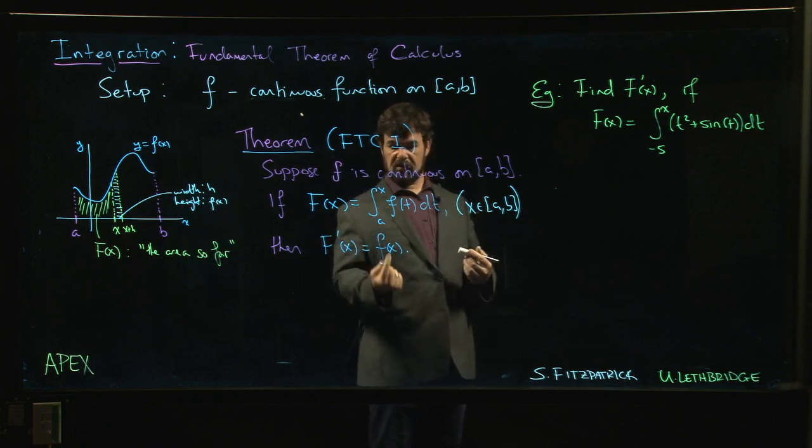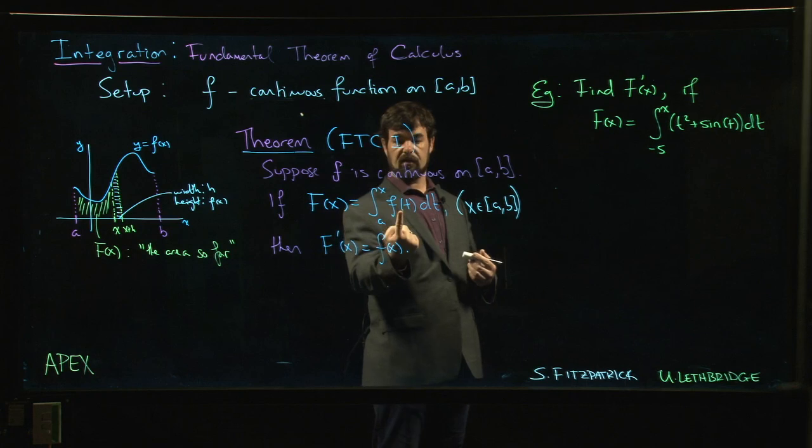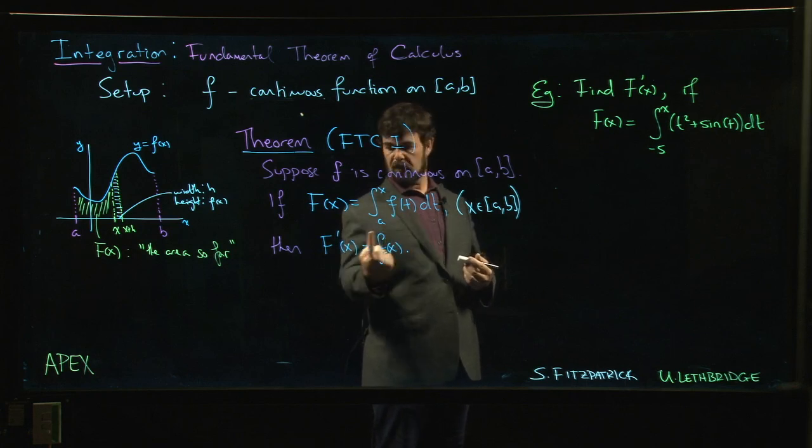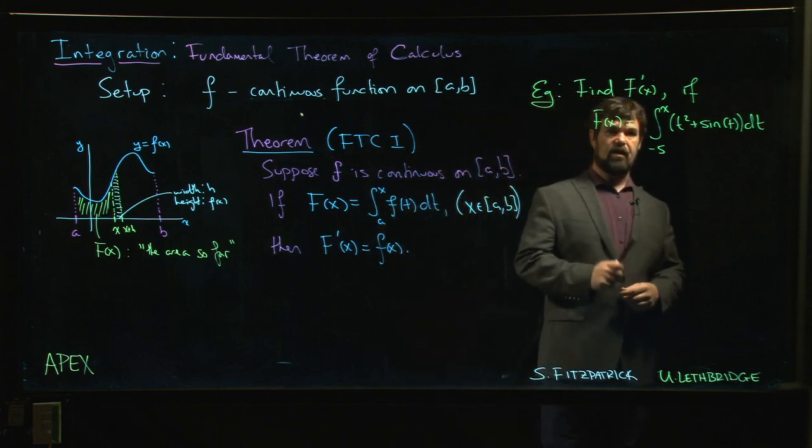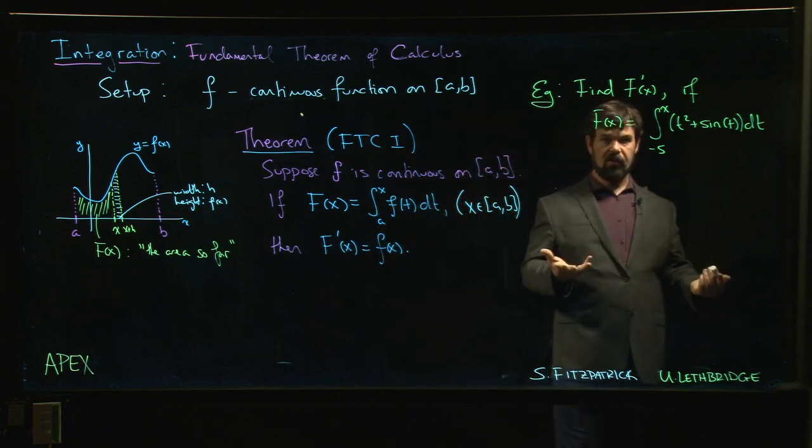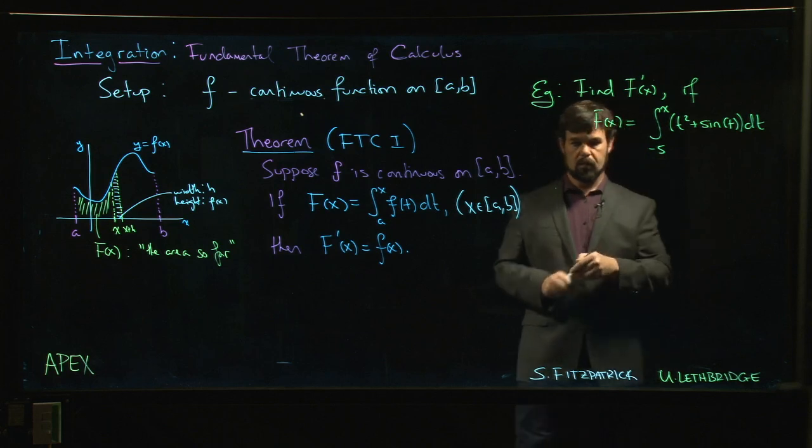So if we define big F in terms of this integral, it is an antiderivative for the function we started with. Big F prime gives us back the little f. So that means if we have a function like this defined as an integral and we want to calculate big F prime...